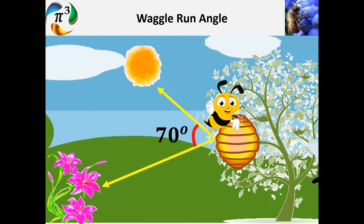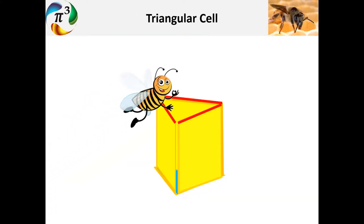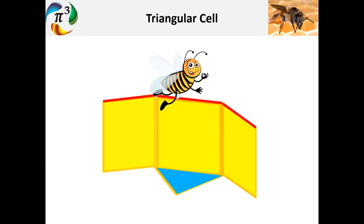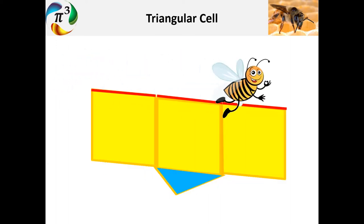They could tell us how they apply the concept of area and perimeter to calculate the amount of wax needed for building their hive.